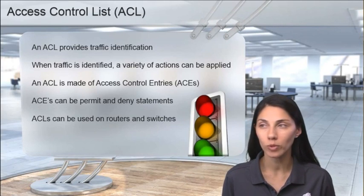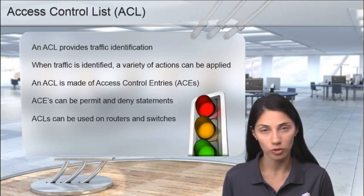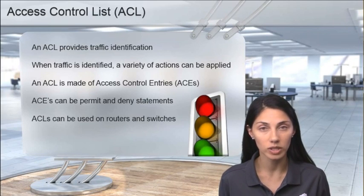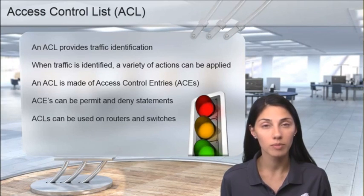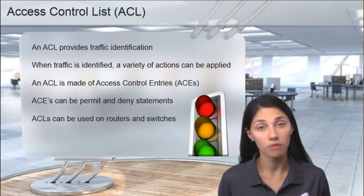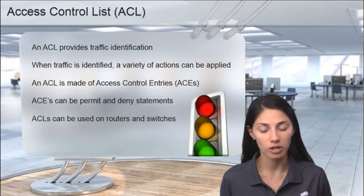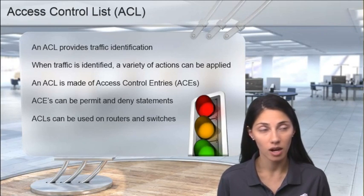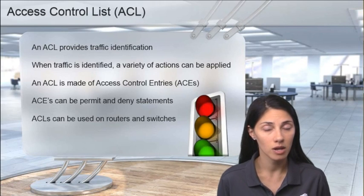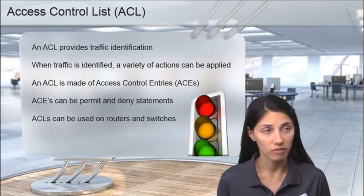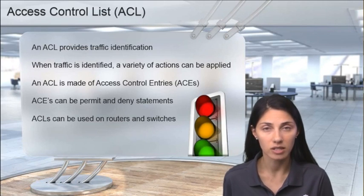First and foremost, when we think about why we might want to capture or identify different types of traffic, there are lots of different reasons. The foundational concepts of ACLs we're going to look at today are primarily to either allow traffic to go through a routed interface or to prevent certain types of traffic through a routed interface. Maybe we have a specific part of our network that we don't want any web access to, or we don't want any email traffic, or FTP traffic, or we just don't want a specific subnet talking to that part of the network.